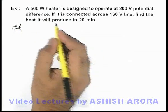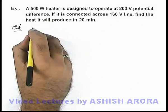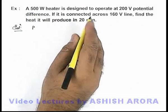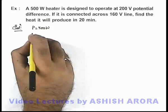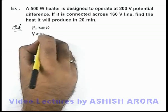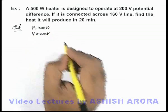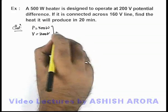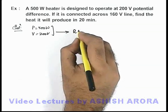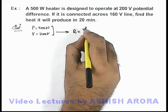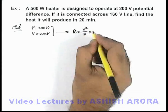So first, we need to calculate the resistance with the power rating of the heater. It is given that it consumes 500 watt power when it is operated at 200 volt potential difference. So from this information we can easily calculate the resistance of this heater, which is equal to V squared by P, as we already studied it.